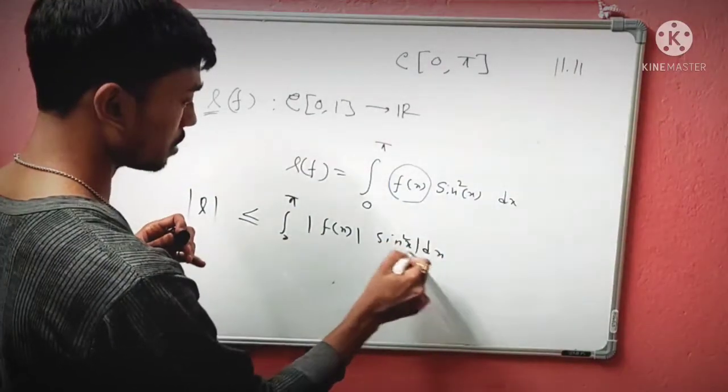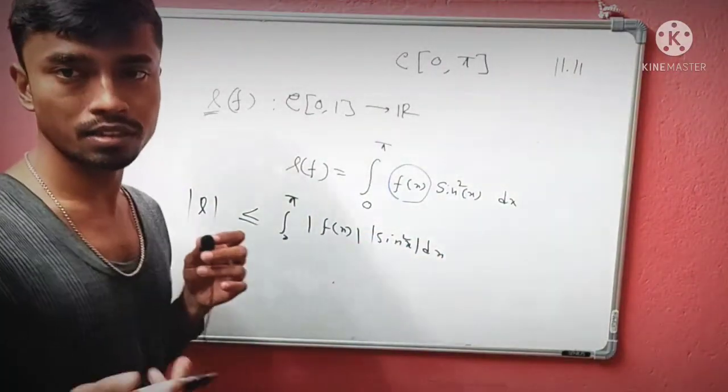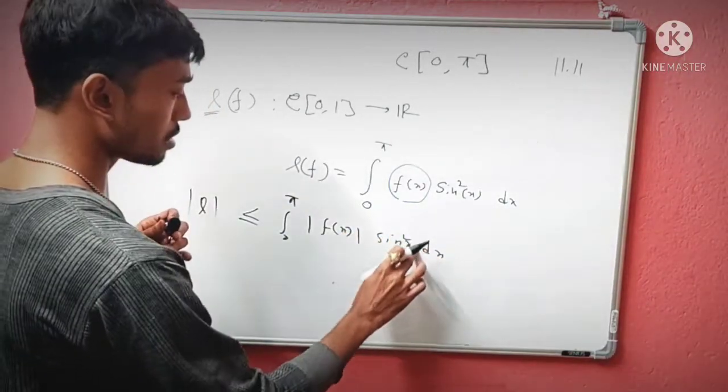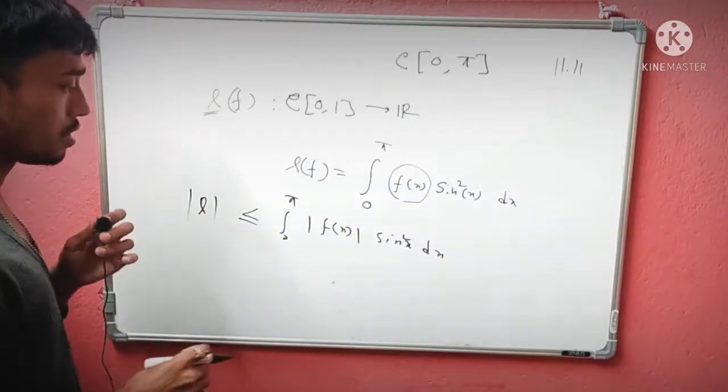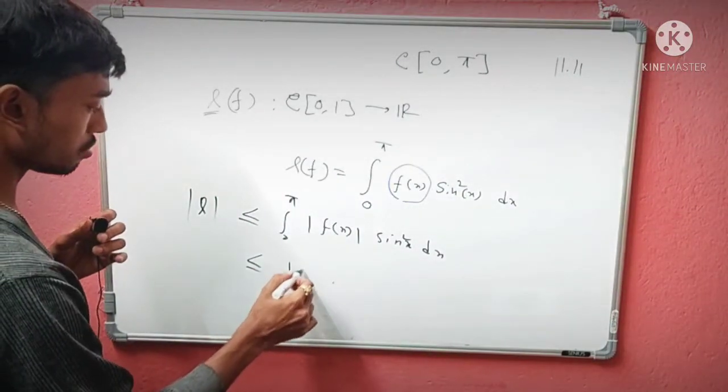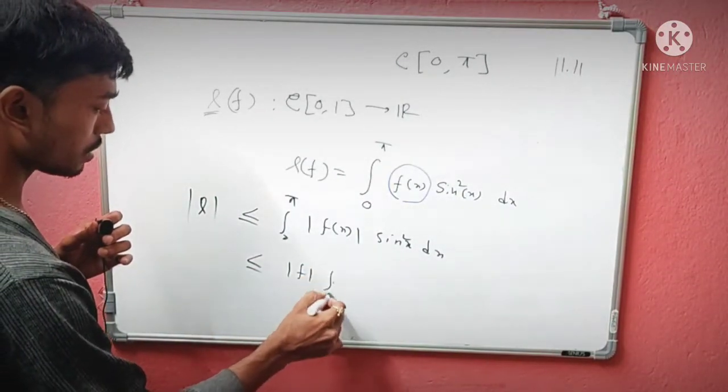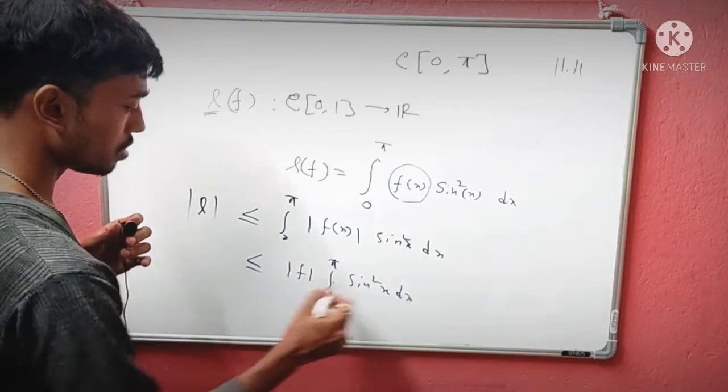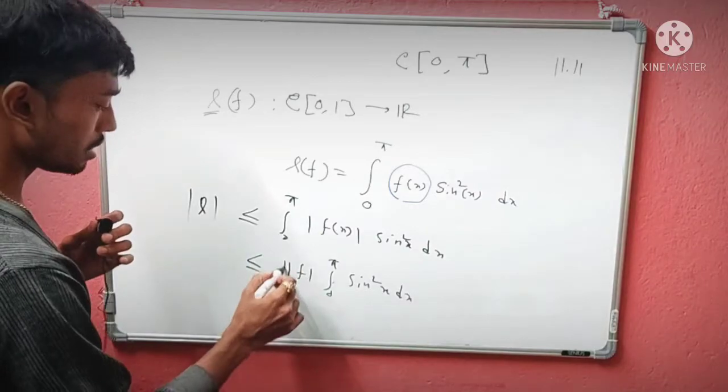Since sin²x is non-negative, you don't need the modulus there. So this becomes ≤ ||f|| ∫₀^π sin²x dx, where ||f|| is the supremum norm on C[0,π].